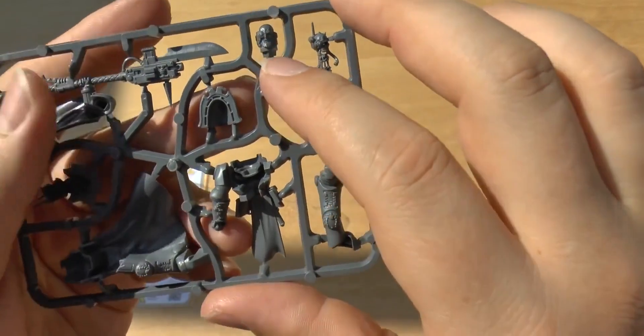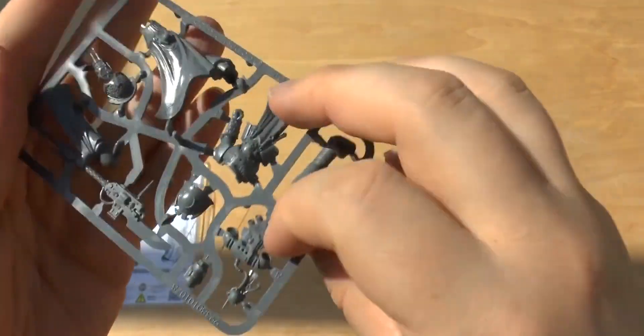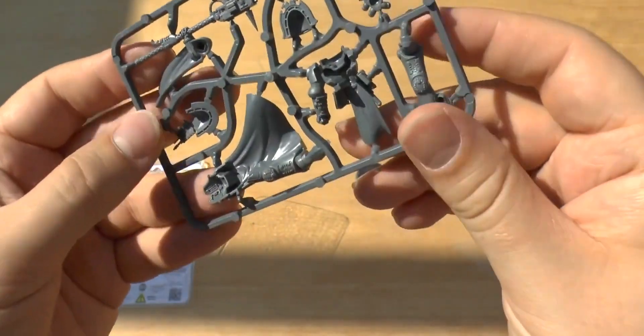It's got his servo skull. His bearded head. You can't get him with a helmet, unfortunately. It doesn't look like he has his helmet on his person either.